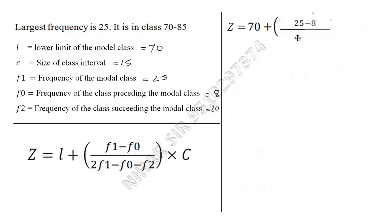f0 is 8, upon 2 f1 minus f0 minus f2. That means 2 times 25 minus 8 minus 20, bracket close, times class length, which is 15.